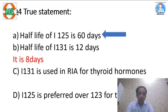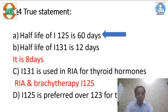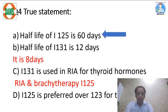Statement C: iodine-131 is used for radioimmunoassays of thyroid hormones — this is false. Iodine-131 is used for beta therapy of thyroid tumors and for ablation of thyroid tissue in Graves' disease. For radioimmunoassays and brachytherapy, we use iodine-125. Statement D: iodine-125 is preferred over iodine-123 for thyroid scan — this is false. Iodine-123 is preferred for thyroid scans, not iodine-125.